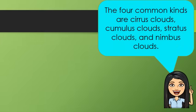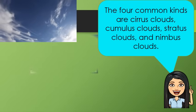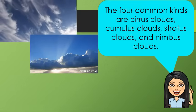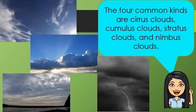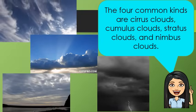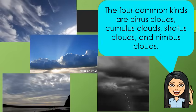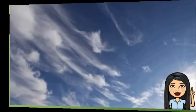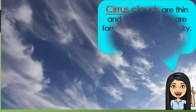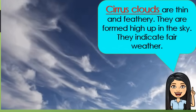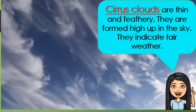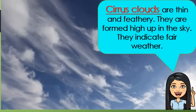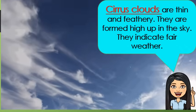The four common kinds of clouds are cirrus clouds, cumulus clouds, stratus clouds, and nimbus clouds. Let's tackle them one by one. These are cirrus clouds. They are thin and feathery. They are formed high up in the sky. They indicate fair weather.